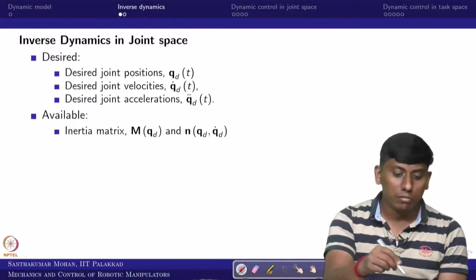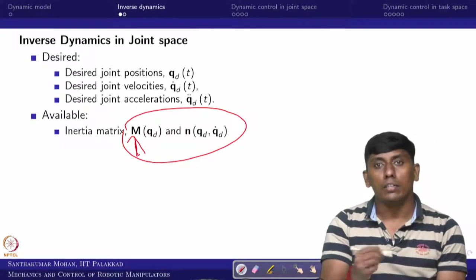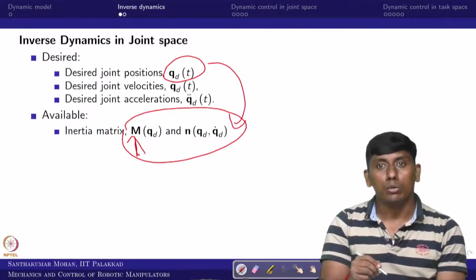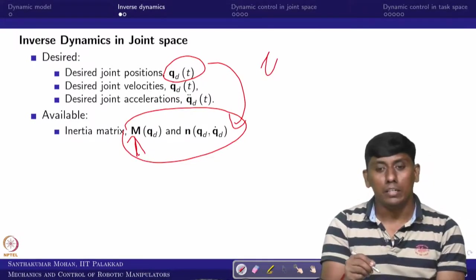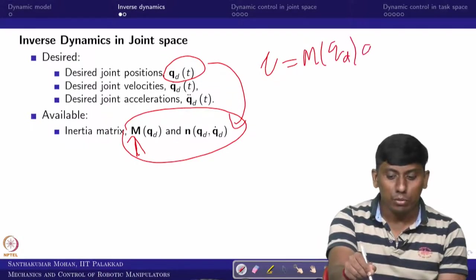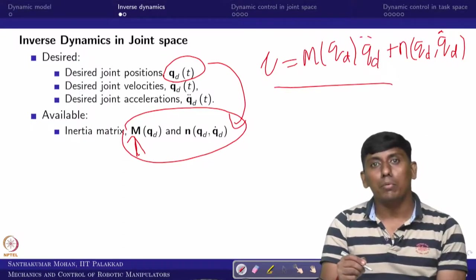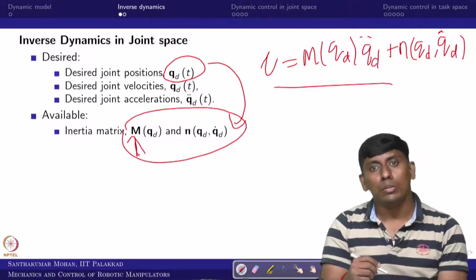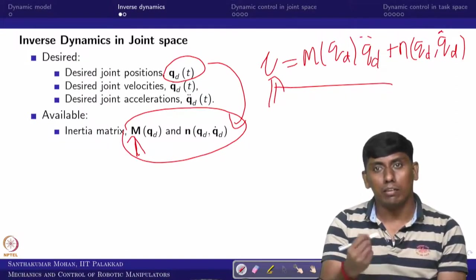What would be available to us? The inertia matrix based on q-desired and q-dot-desired is known. Then we can find N(q-desired, q-dot-desired) and M(q-desired). In that case, the tau we need to find can be written as M(q-desired) times q-double-dot-desired plus N(q-desired, q-dot-desired). This is the inverse dynamic model. This inverse dynamic model is useful when there is no gravity involved. Whenever gravity is involved, it is very difficult to use this as open-loop control.